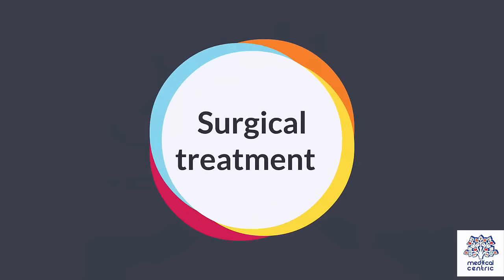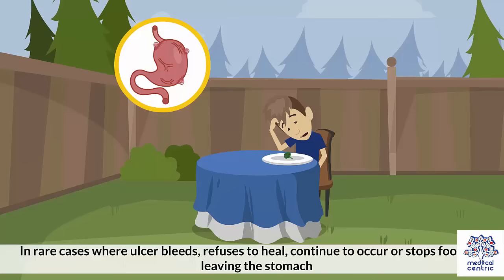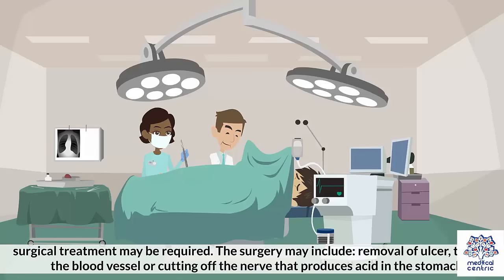Surgical treatments. In rare cases where the ulcer bleeds, refuses to heal, continues to occur, or stops food from leaving the stomach, surgical treatment may be required. The surgery may include removal of the ulcer, tying off the blood vessel, or cutting off the nerve that produces acid in the stomach.